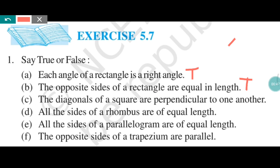The third statement: the diagonals of a square are perpendicular to one another. This is also true. The diagonals of a square and rhombus bisect one another at 90 degrees. When two lines intersect at 90 degrees, we call them perpendicular lines. That's why the diagonals of a square are perpendicular to one another. Now part D.